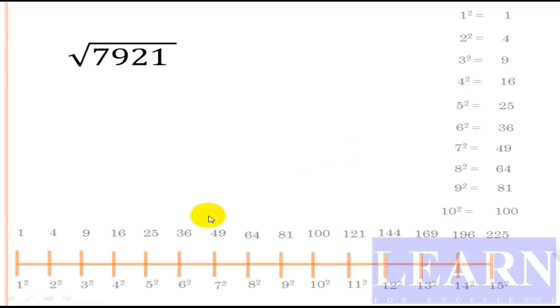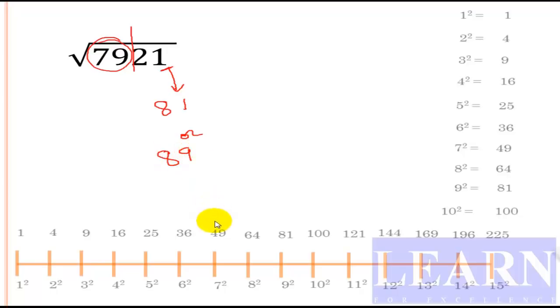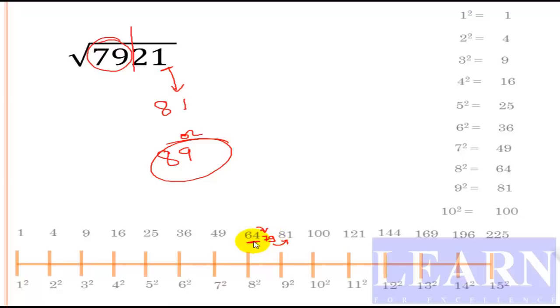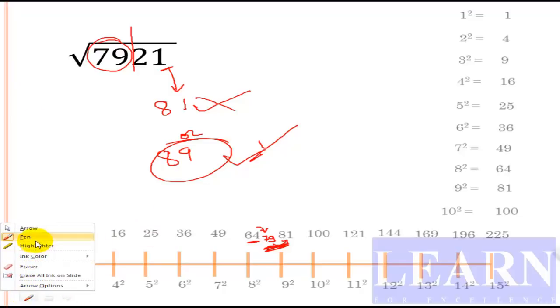The next problem is 7921. The number ends with 1, so the square root will end with 1 or 9. The first part is 79, which is greater than 64 (that is 8 squared), giving us either 81 or 89. Now 79 is very close to 81 (the next square). If the actual number is closer to the next square, we take the larger number. So the answer is 89.